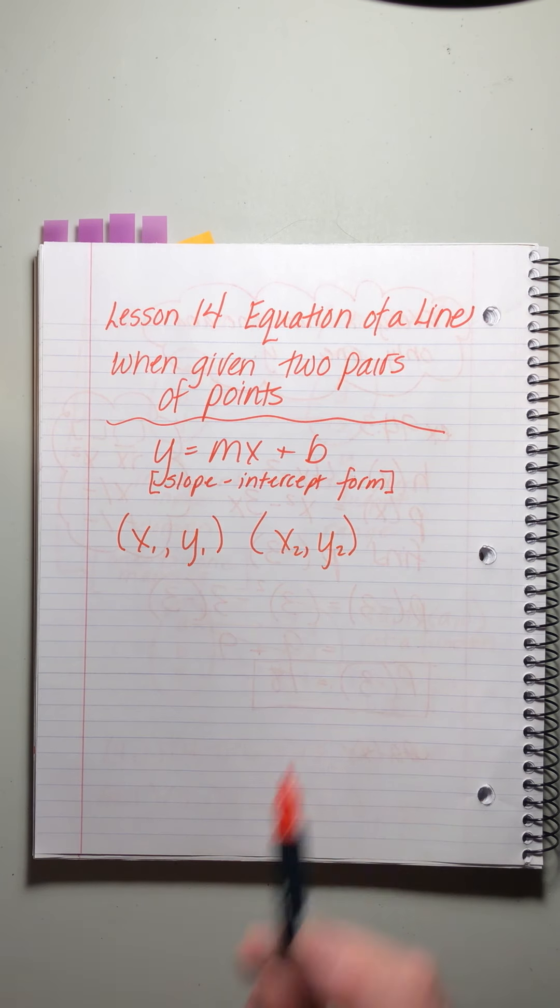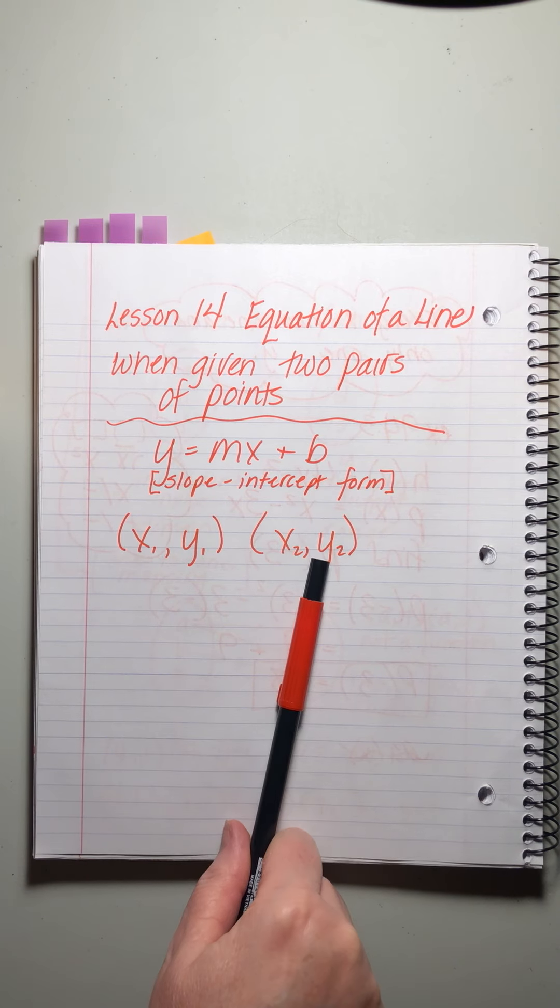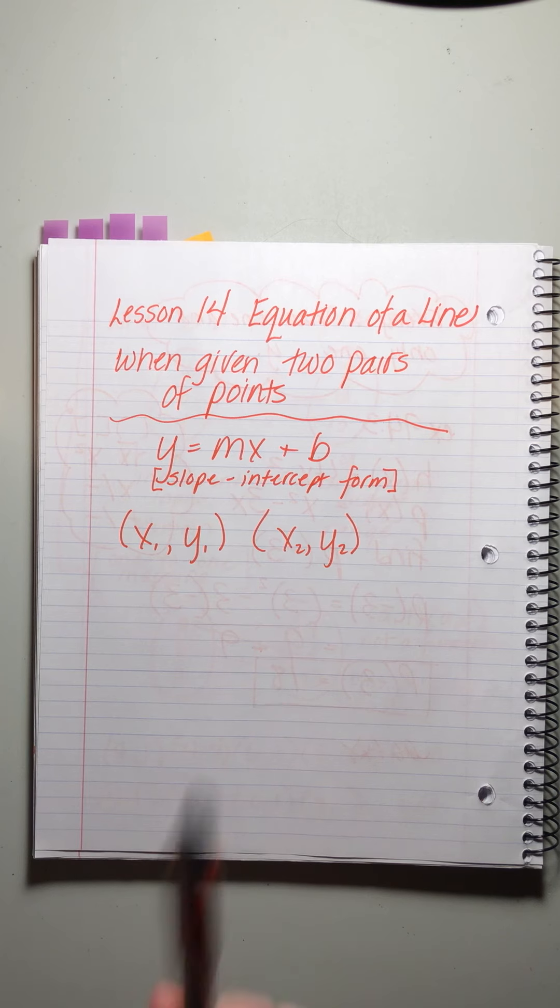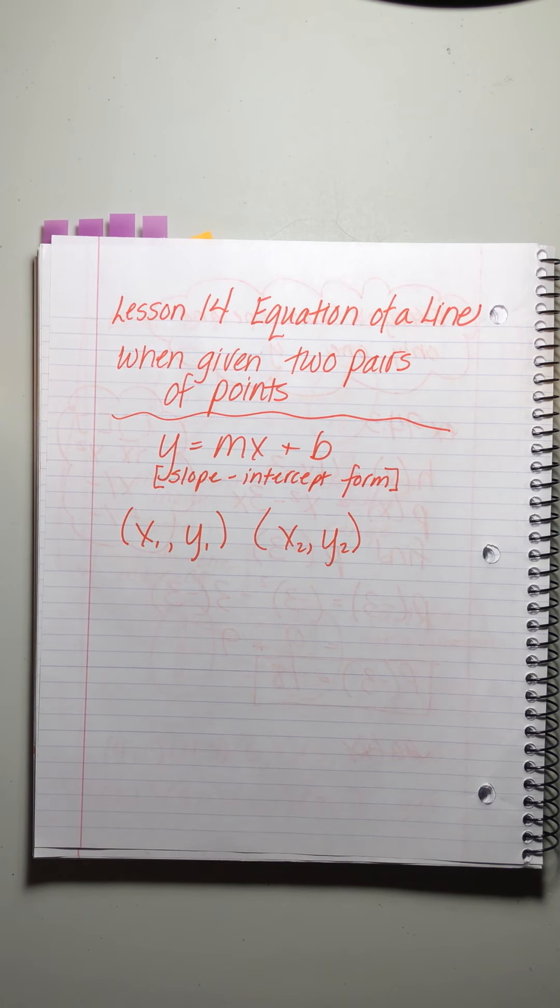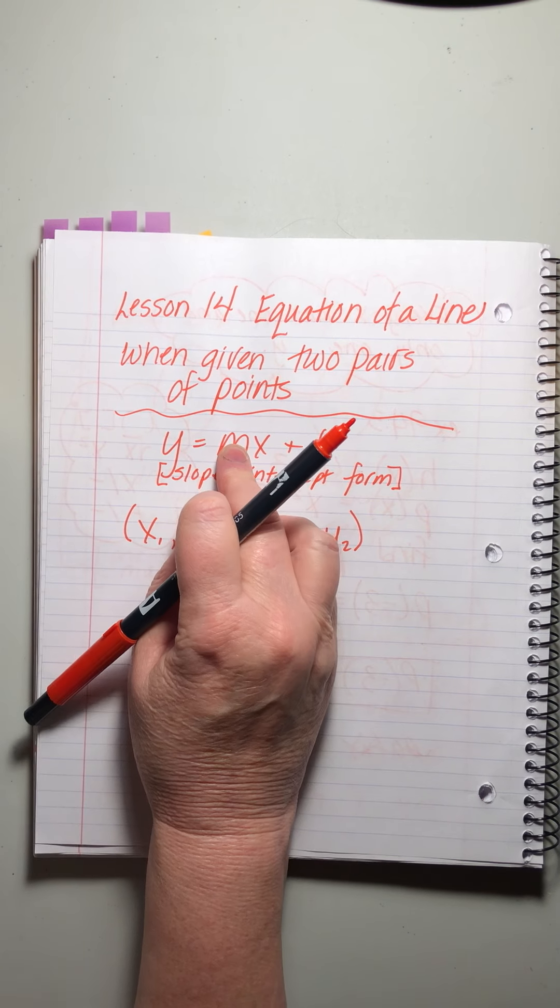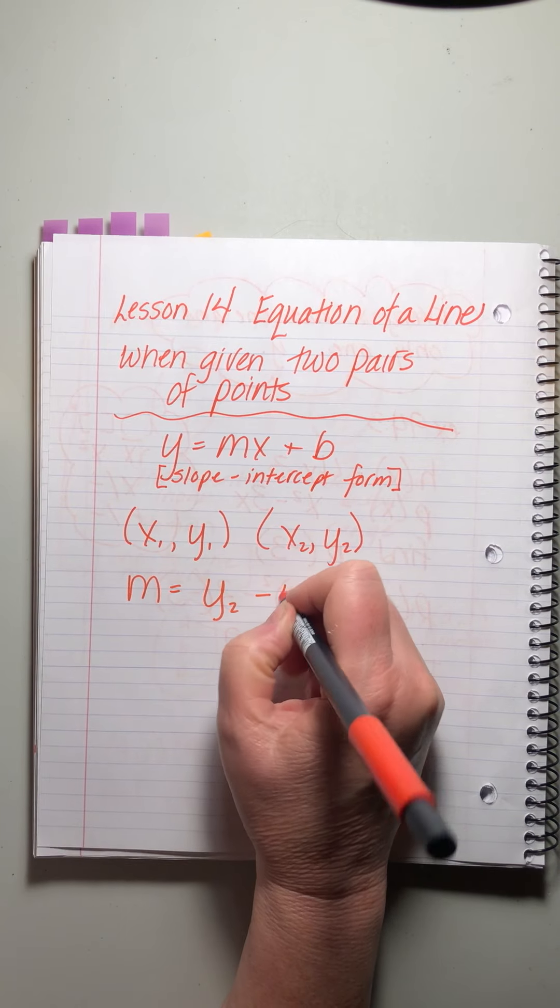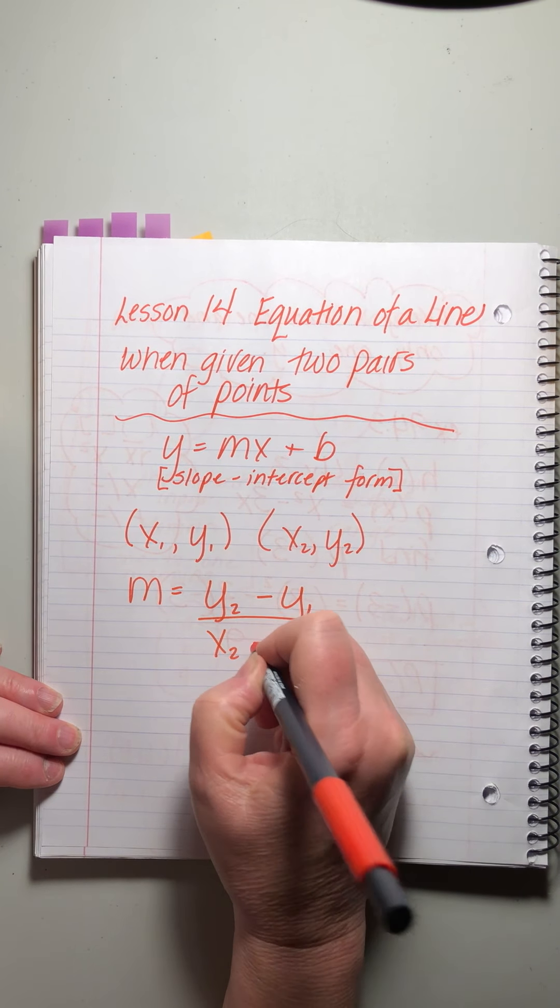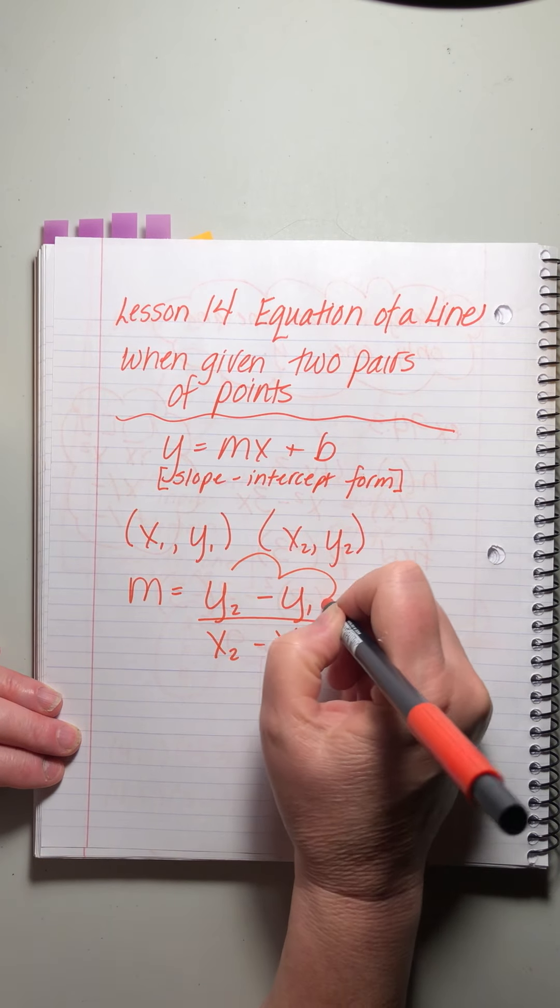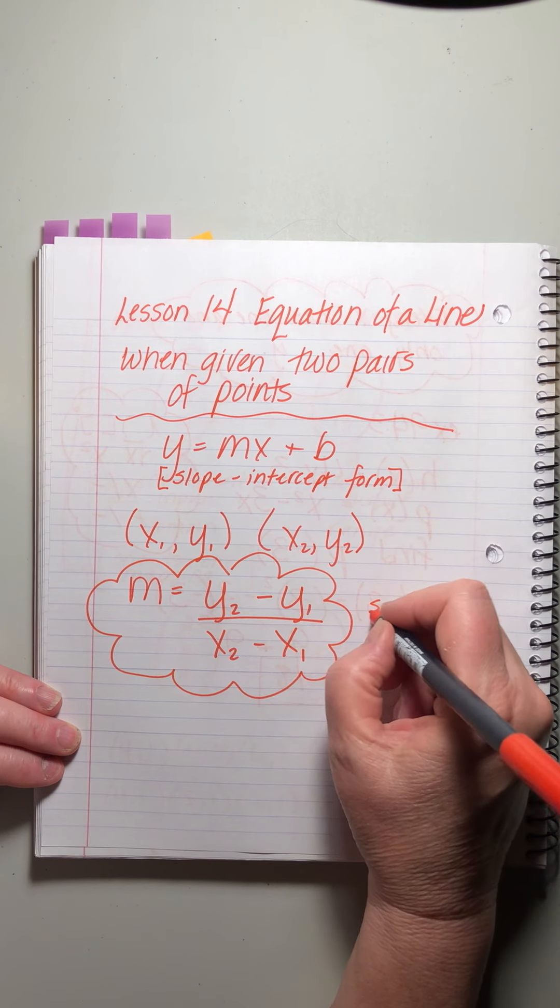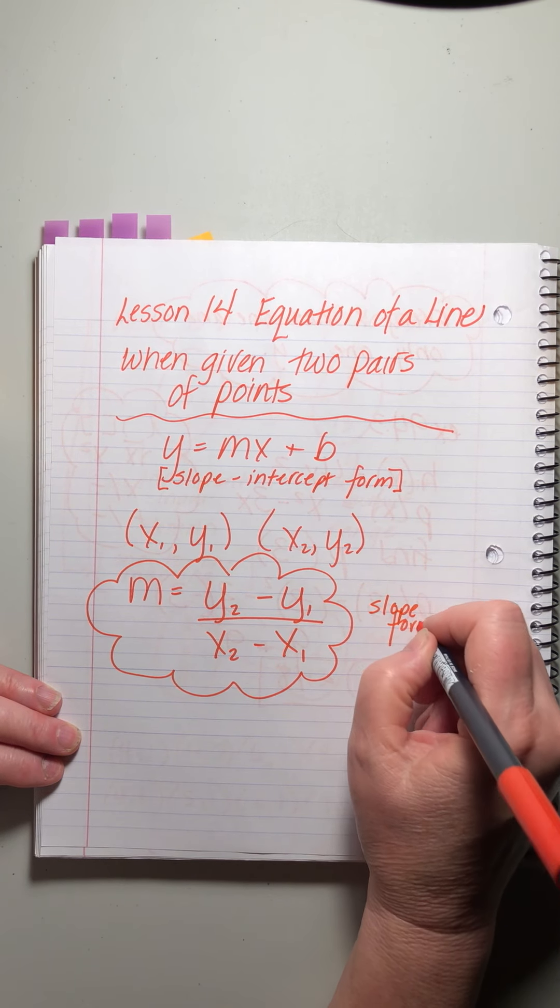Don't let the little subscripts freak you out. It's just a way of saying this is one point, and that's the other point. They each have an x and a y. We want to keep track of this x versus that x. So this is just the little tool we use for doing that. And here comes the tool that we're going to use when we're given two pairs of points, and we want to find our slope.